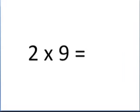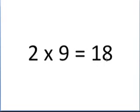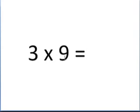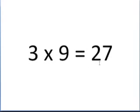Now let's take a look at the number 9. Look at the number being multiplied times 9 — in this case, 2. What is 1 less than 2? That's 1. What number do you add to 1 to get 9? It's 8. So 2 times 9 is 18. The digits of the answer always sum to 9.